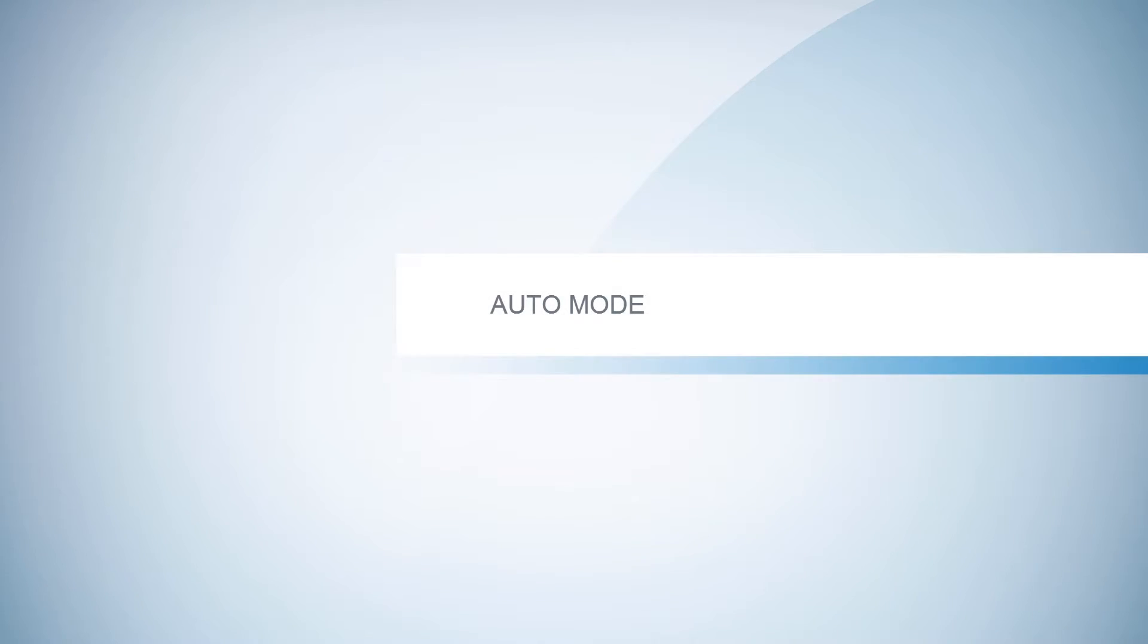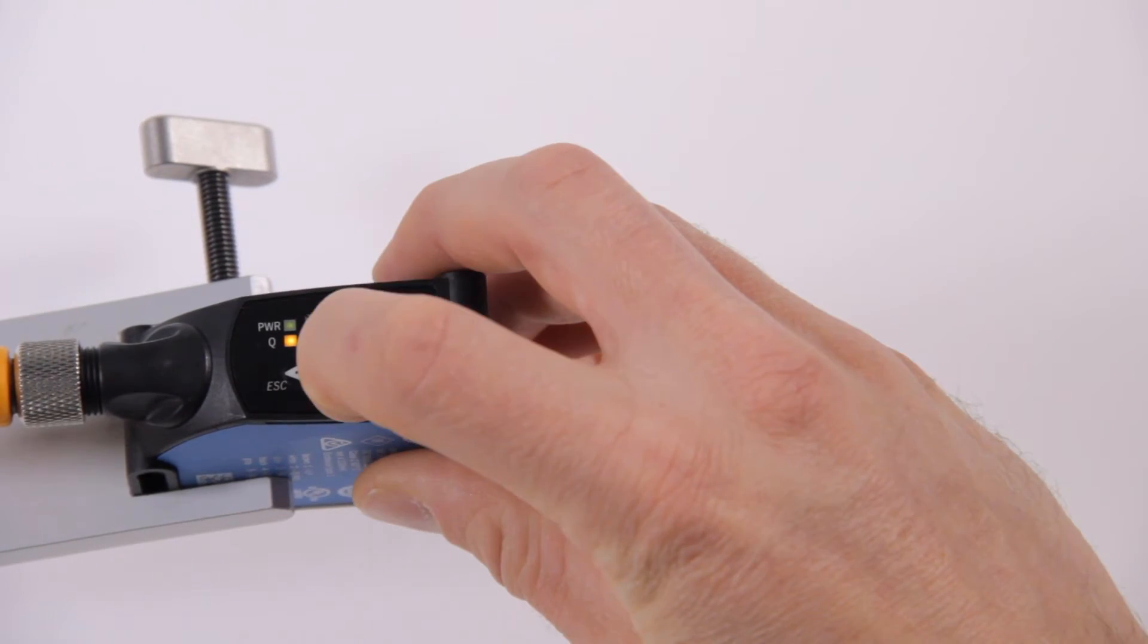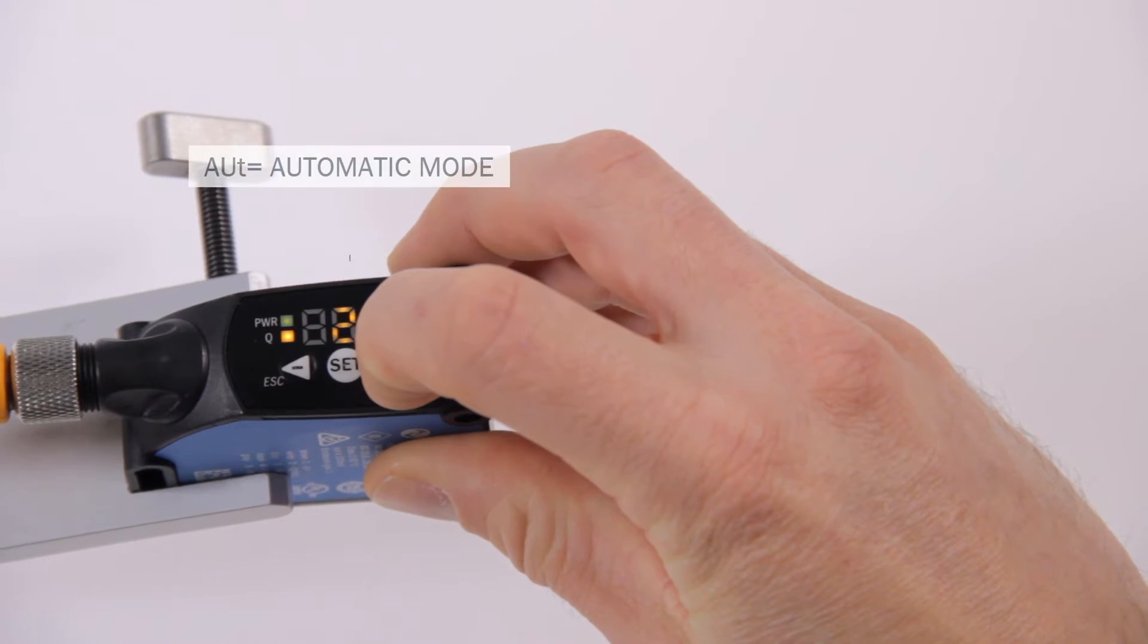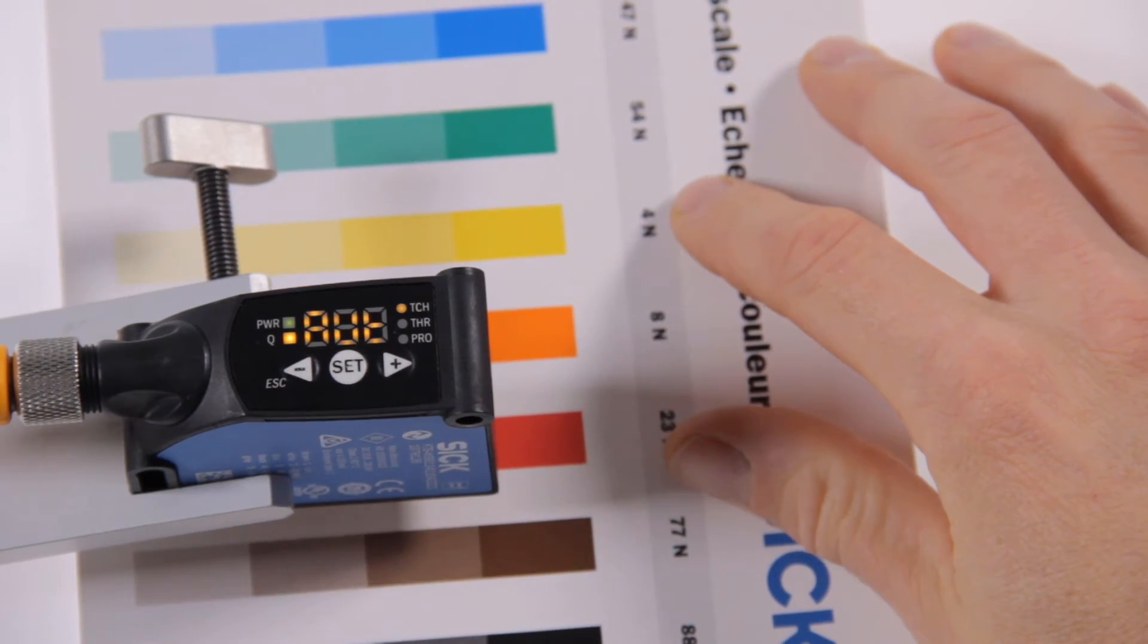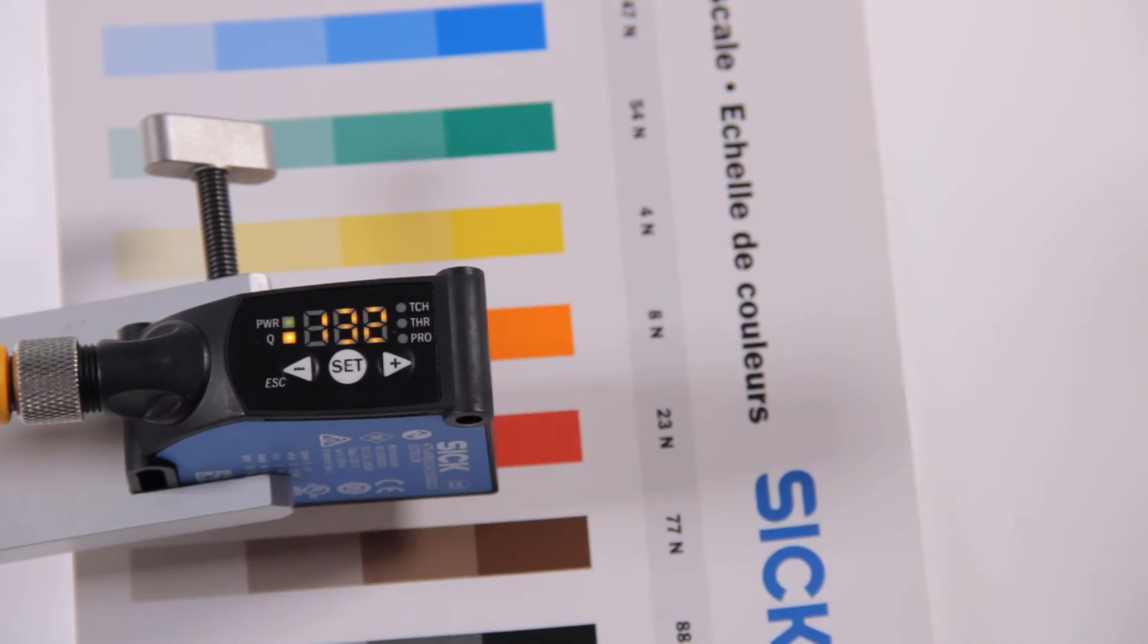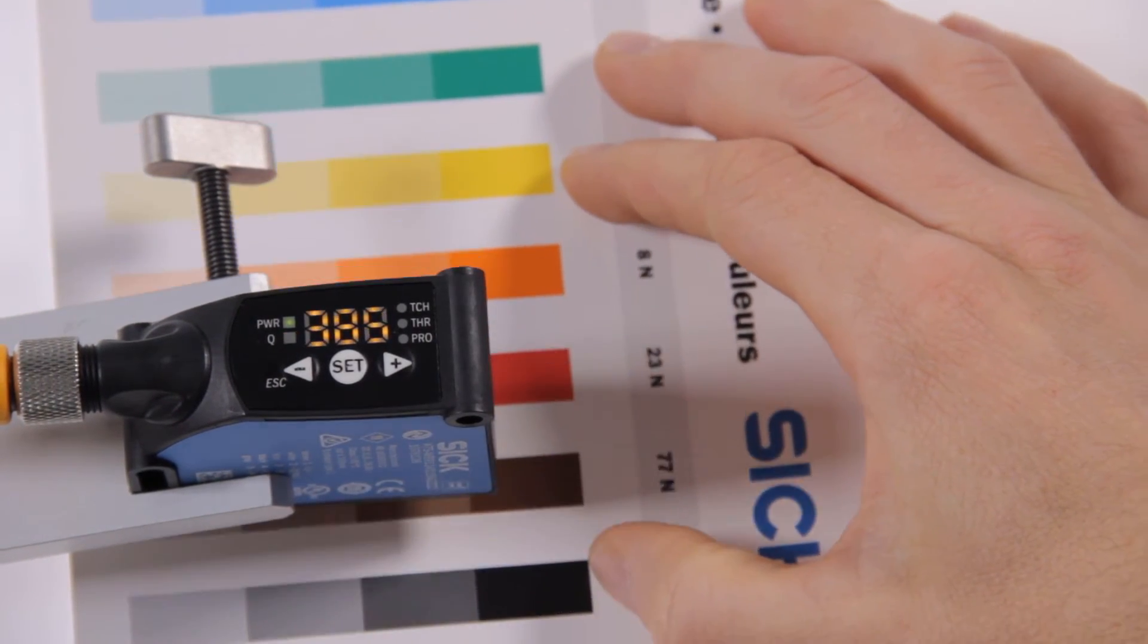Auto mode. Select the menu AUT for the automatic mode. Now move the print mark or the background under the light spot and press SET. After confirmation, the sensor switches into run mode and shows live values.